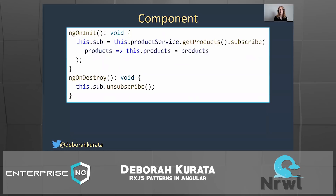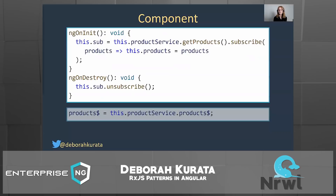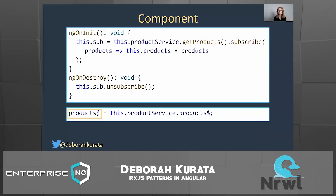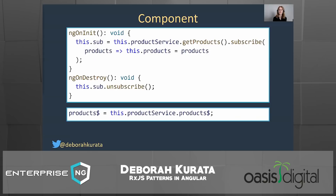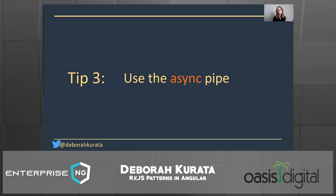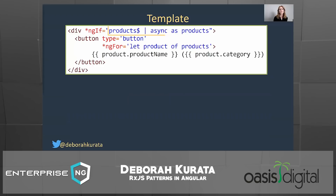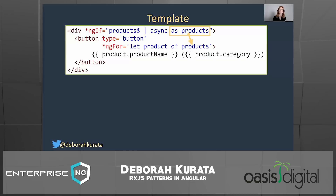In our component, instead of ngOnInit, ngOnDestroy, and all the extra code for managing our subscription, we could just define a local variable products$ and assign it to our product service's products$. You could add some exception handling there. But what about subscribing and unsubscribing? That brings up our next tip: use the async pipe. The async pipe automatically subscribes and automatically unsubscribes for us. In our template, we bind to products$ using the async pipe, and the 'as products' clause defines the variable that the emitted value goes into.